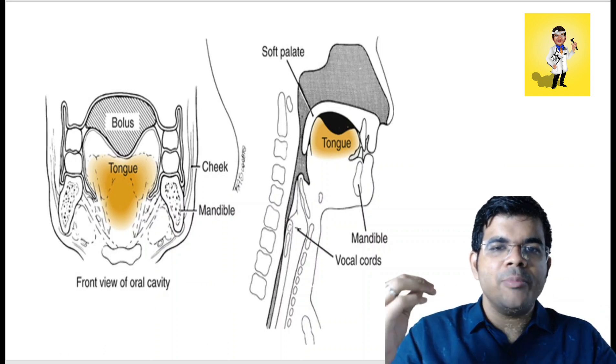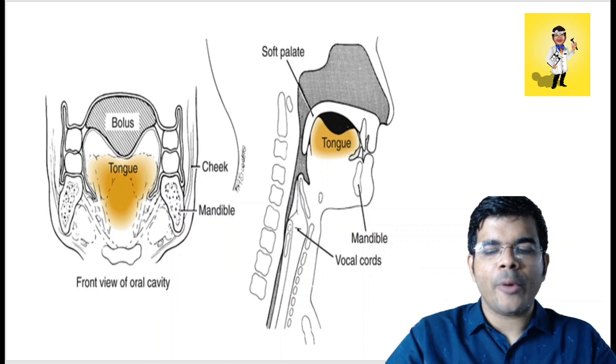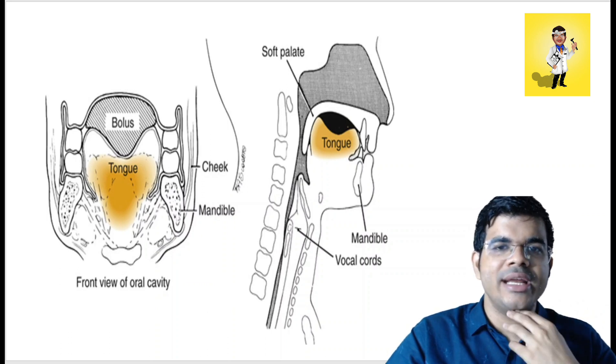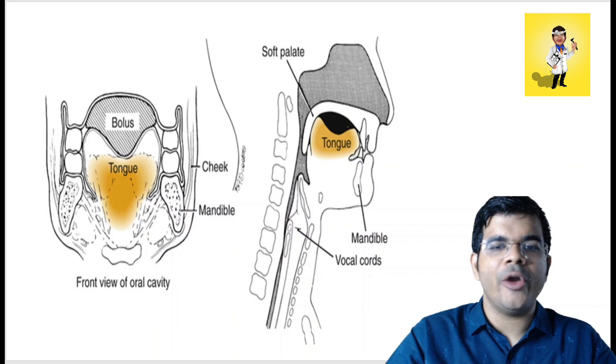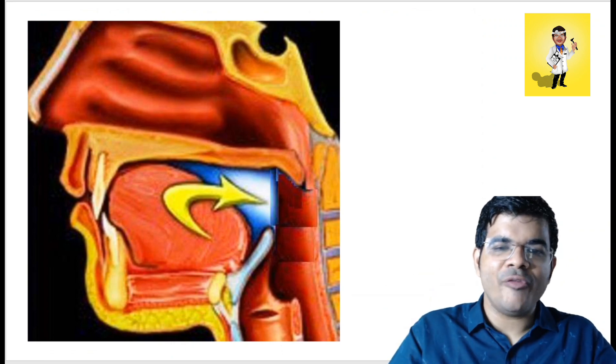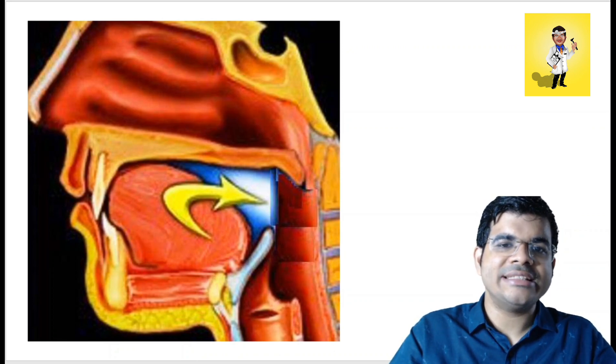Moving from the oral preparatory phase into the oral propulsive phase, the food has to get propelled posteriorly. The tongue acts again, and there is elevation of the mandible with the help of suprahyoid muscles. The tip and lateral parts of the tongue are raised, then a wave of contraction of the tongue muscles occurs; the tongue approximates against the hard palate at the middle and tongue base, creating a piston-like action that propels the food bolus posteriorly. Simultaneously, the soft palate is raised by the levator veli palatini and tensor veli palatini.